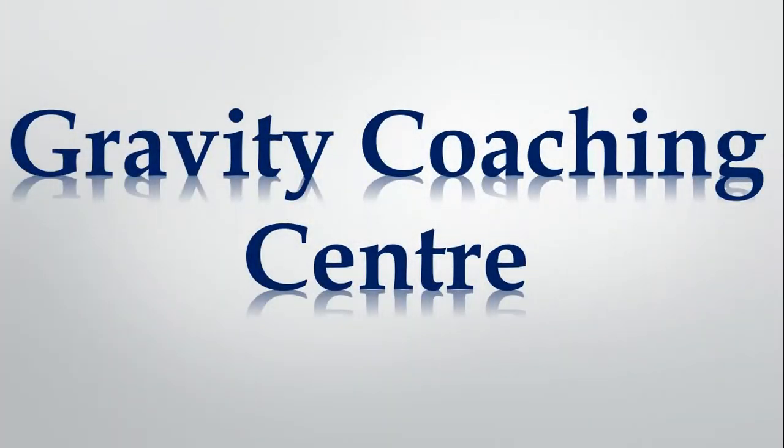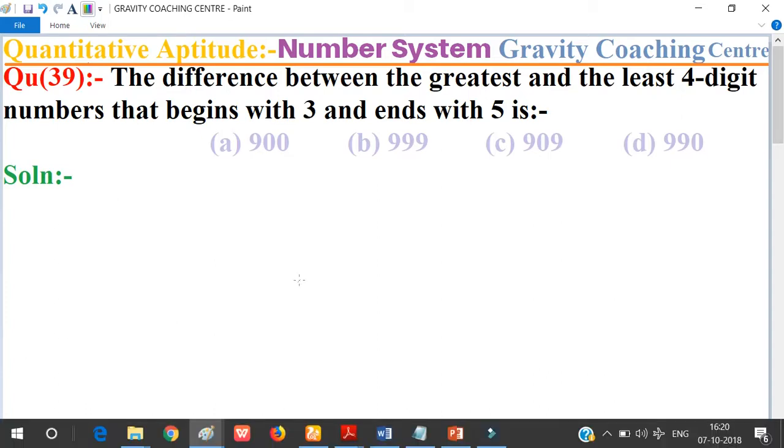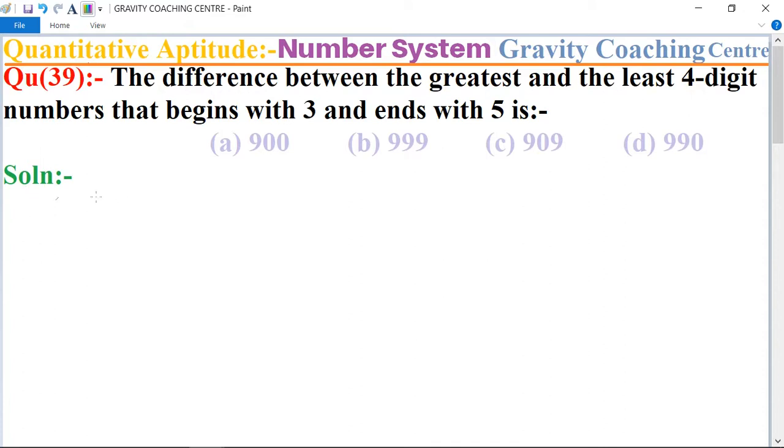Welcome to our channel, Gravity Coaching Center. Quantitative Aptitude, Chapter Number System, Question Number 39: The difference between the greatest and the least four-digit number that begins with 3 and ends with 5 is. So in this question, first...